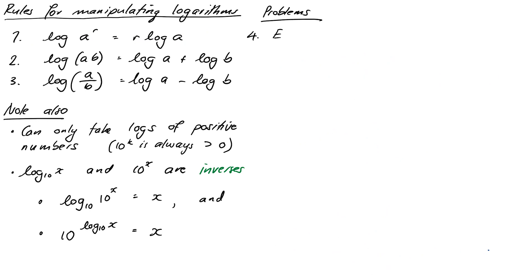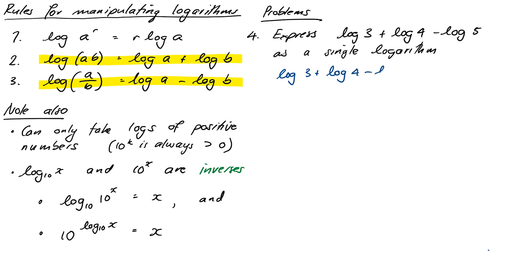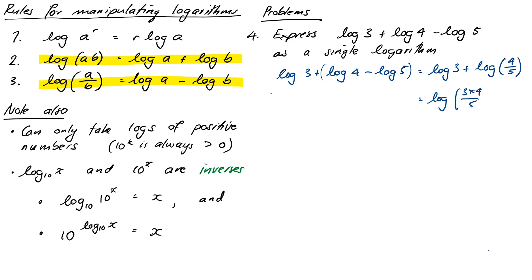Question 4: can we express log 3 plus log 4 minus log 5 as a single logarithm? We can. First, group the log 4 and log 5 using the quotient rule — the difference turns into a quotient: log 3 plus log of 4 over 5. The minus log 5 became a 5 on the bottom of the fraction inside the log. Then using the product rule, the sum of two logs becomes log of 3 times 4 over 5, which is log of 12 over 5.